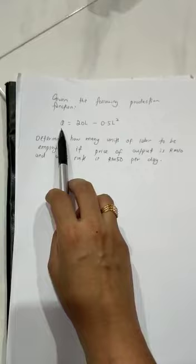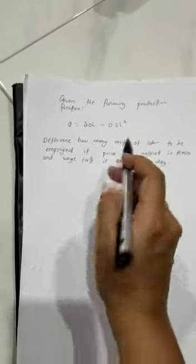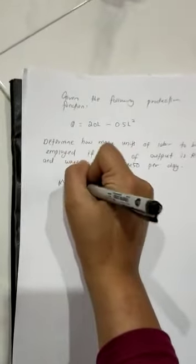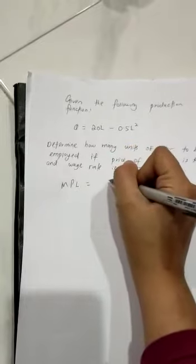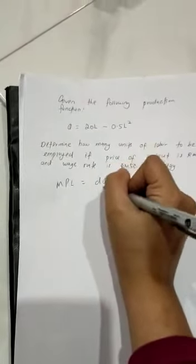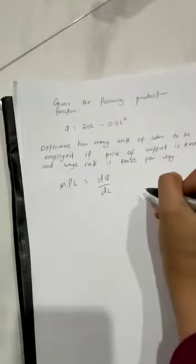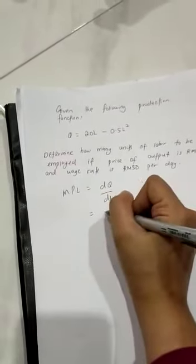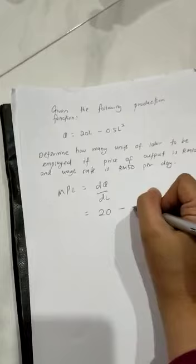First, we have to find the marginal product of labor. Remember that quantity means total product of labor. Marginal product of labor is dQ/dL, which equals 20 minus L.